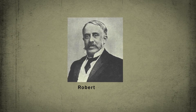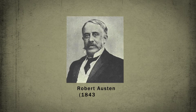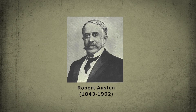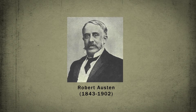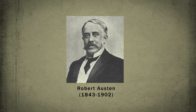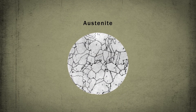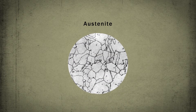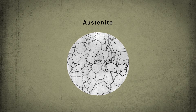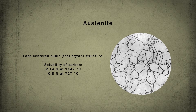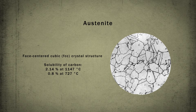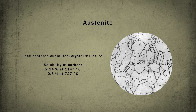Austenite, which got its name in honor of the English scientist Robert Austen, who studied the structural characteristics of alloys of the iron-carbon system. Austenite is non-magnetic and has low mechanical characteristics. Its grains under the microscope also have a light shape, but different from the ferrite grains.